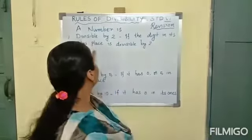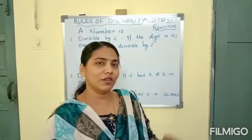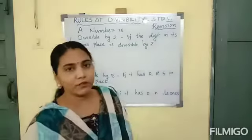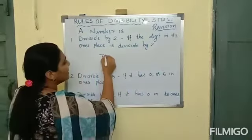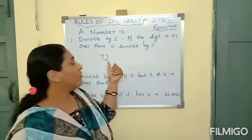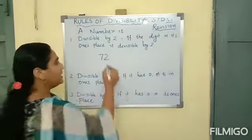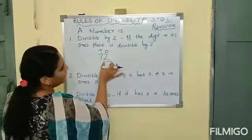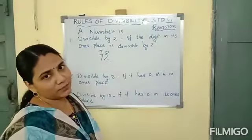First one: divisible by 2. How will you check that a number is divisible by 2? A number is divisible by 2 if the digit in its ones place is divisible by 2. For example, if I take the number 72, we check the ones place. The digit 2 is in the ones place. If the digit in the ones place is divisible by 2, you can say that the whole number is divisible by 2.